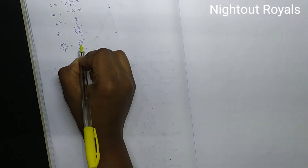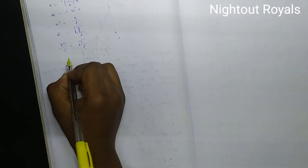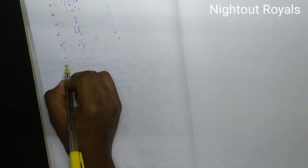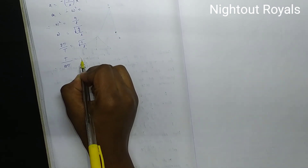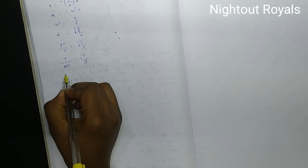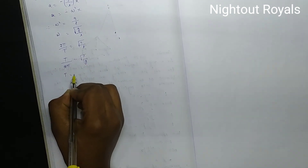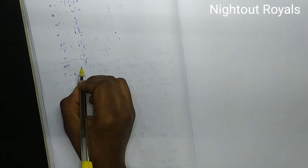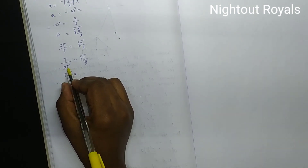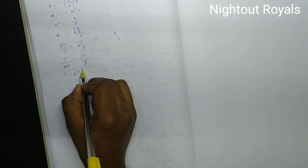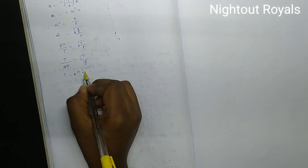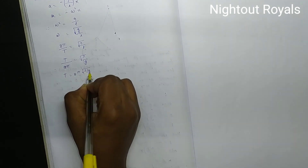This gives 2 pi by T equals root of g by L. Taking the reciprocal: T by 2 pi equals root of L by g. Cross multiplying: T equals 2 pi root of L by g.